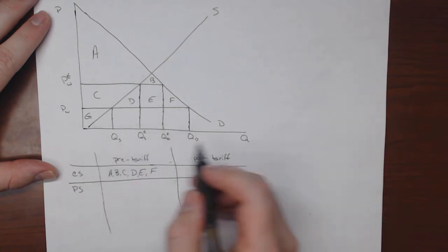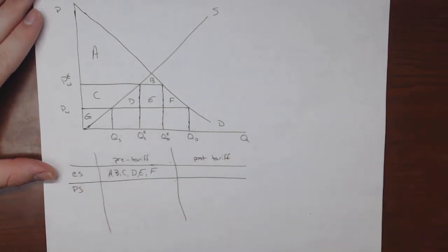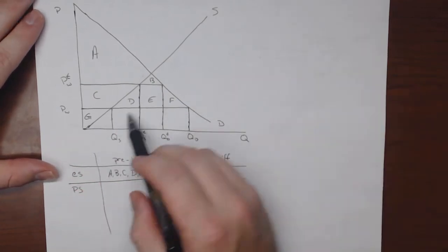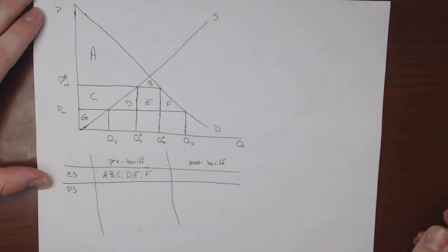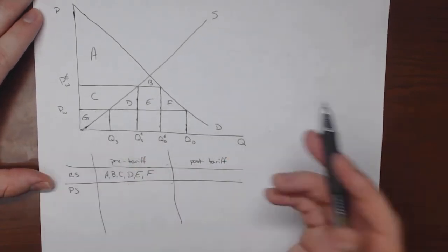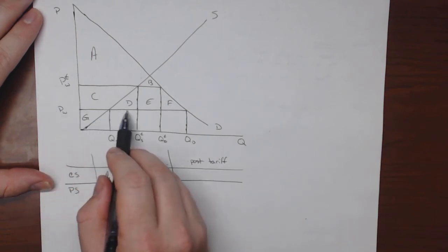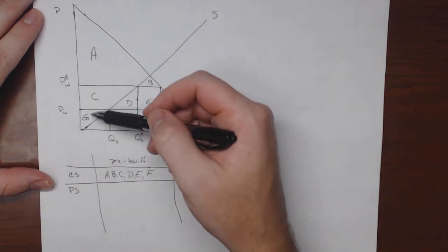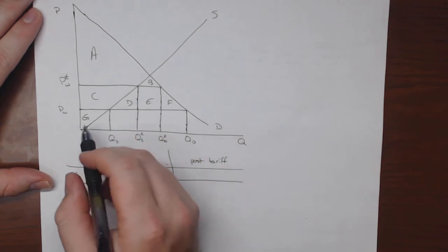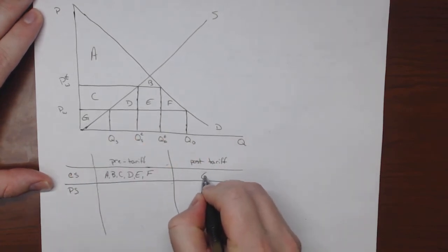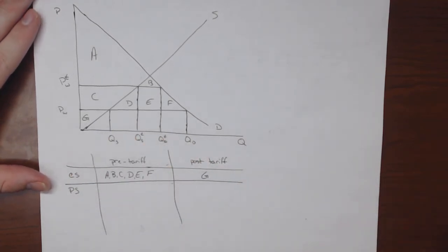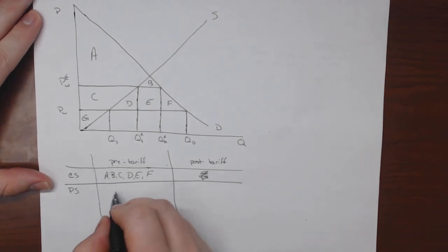And the producer surplus, recall that that is the area above the supply curve and below the price that the producers are receiving. So if there's no tariff, they're receiving Pw. So here's the price. So we want the area below that line and above the supply. And that's just going to be G.